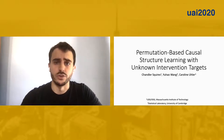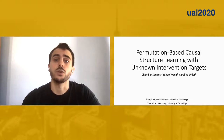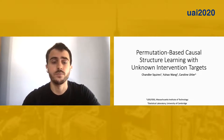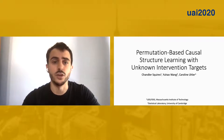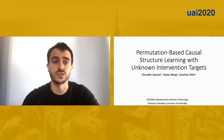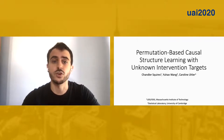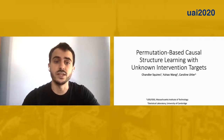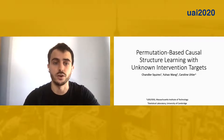Today, I'll be talking about our paper on structural learning from interventional data with unknown targets. I'm Chandler Squires, and this is joint work with Yu Hao Wang and Carolyn Uhler. The utility of interventional data for the identification of causal models is well known, allowing one to distinguish between models that would be indistinguishable from just observational data. This has motivated the development of several structure learning algorithms which make use of interventional data, including greedy interventional equivalent search and the interventional greedy sparse permutation algorithm.